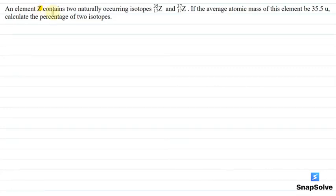The question says an element Z contains two naturally occurring isotopes 35-17-Z and 37-17-Z. If the average atomic mass of this element is 35.5 units, calculate the percentage of two isotopes.